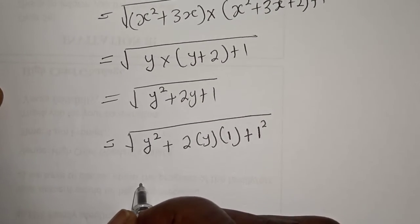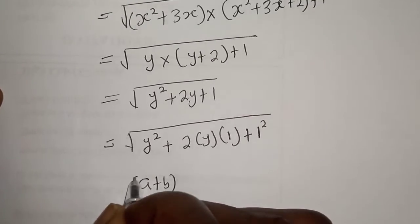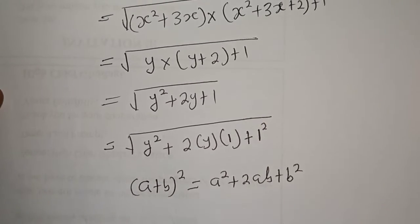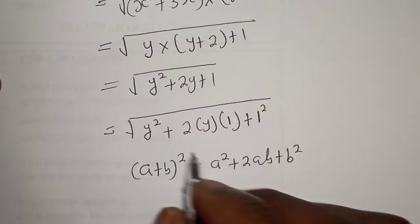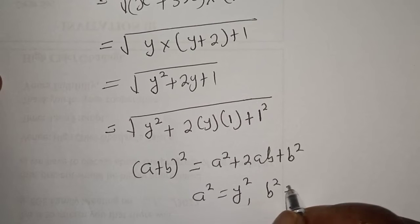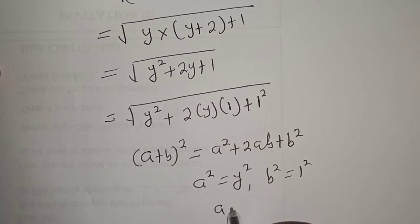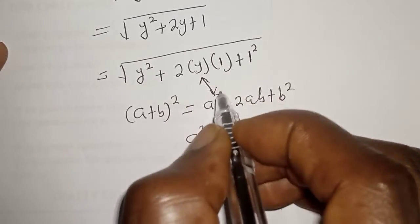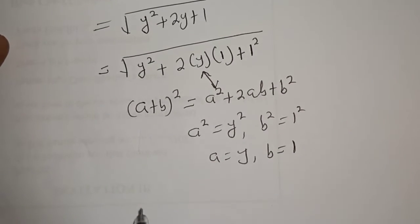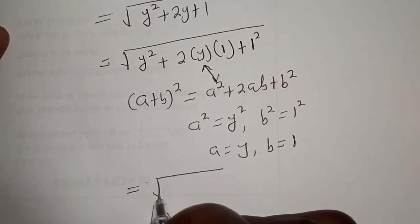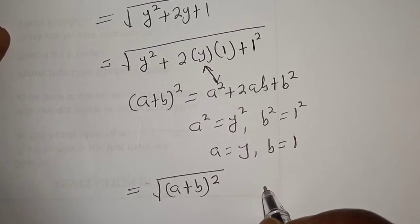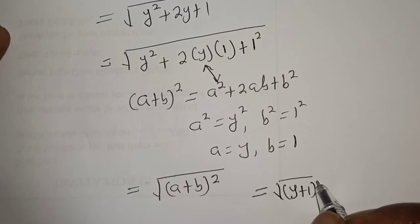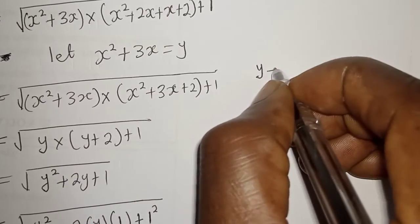Take note of the rule: A plus B squared equals A squared plus 2AB plus B squared. Here A squared equals Y squared and B squared equals 1 squared, so A equals Y and B equals 1. Therefore the whole expression is equivalent to A plus B squared, giving square root of Y plus 1 squared, which simplifies to Y plus 1.